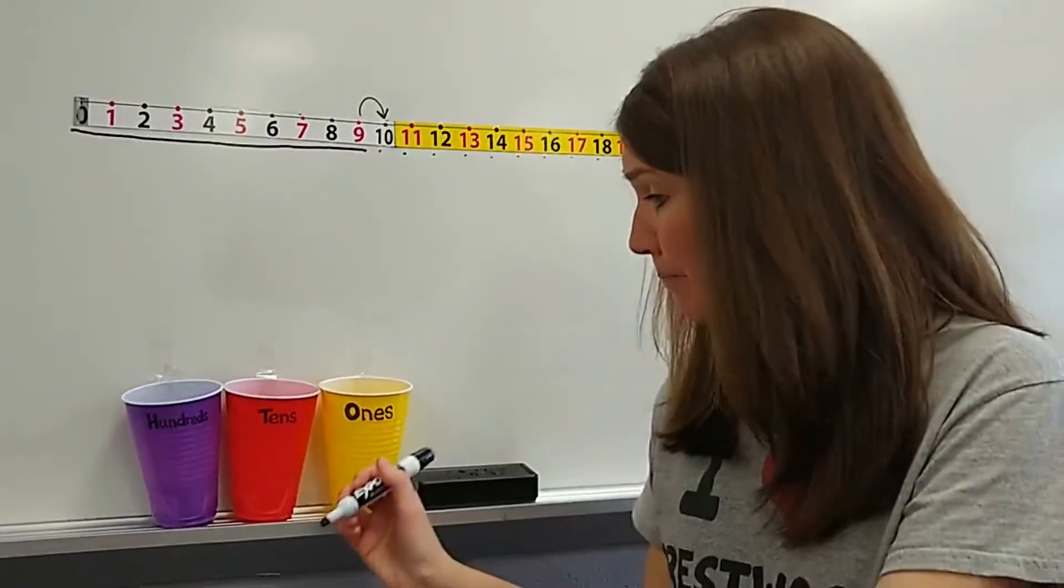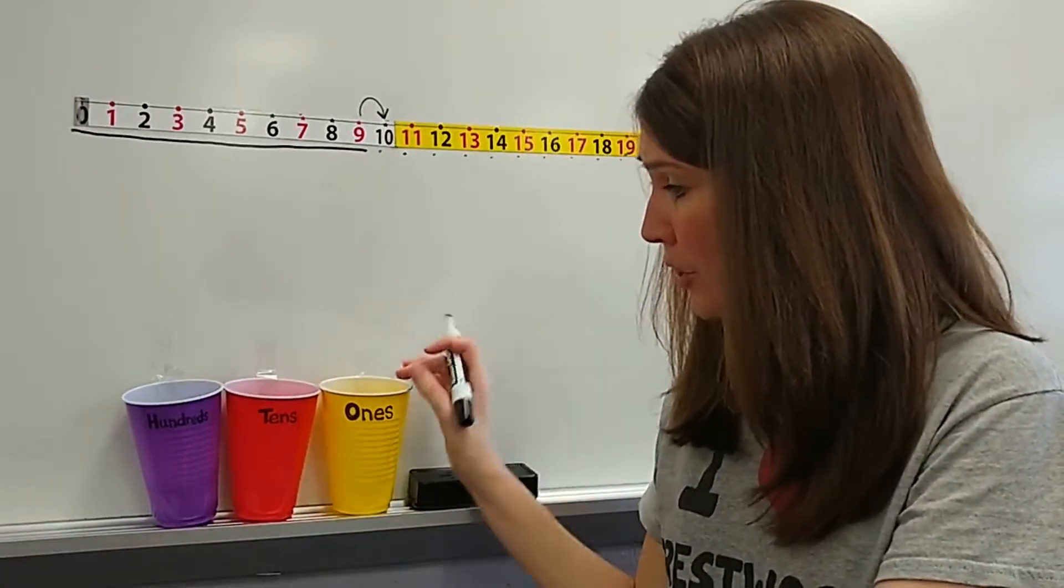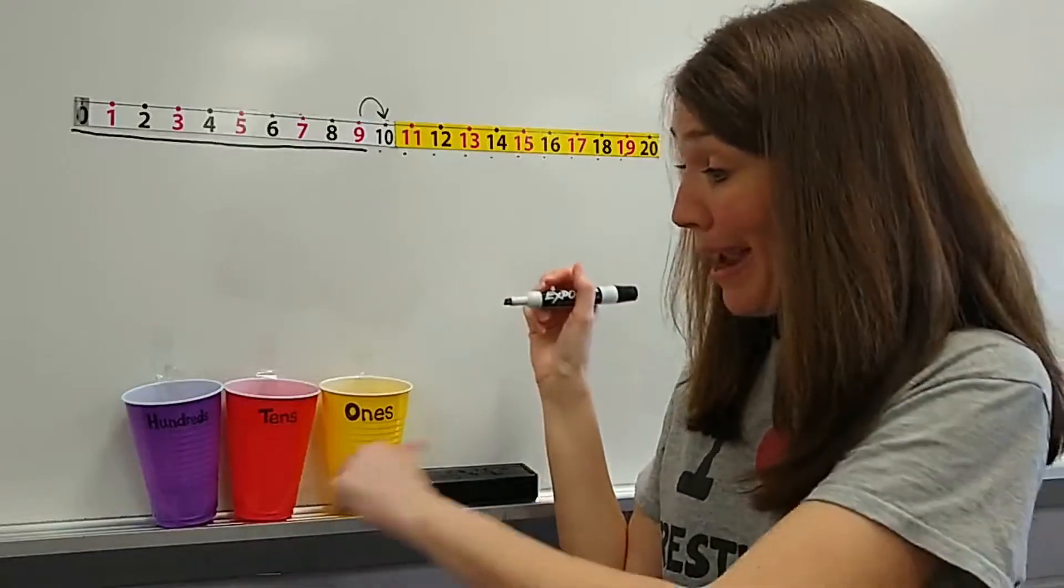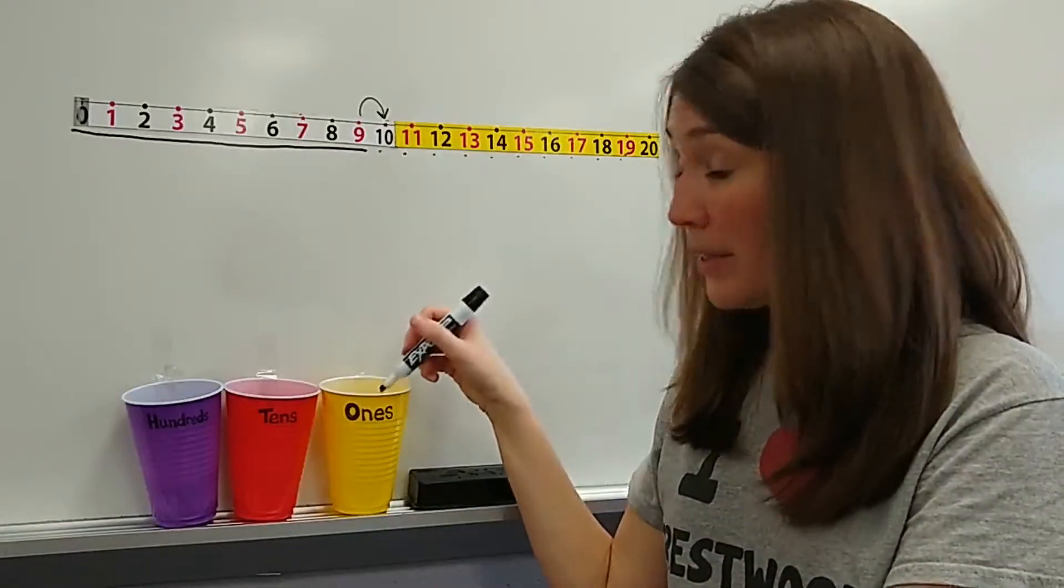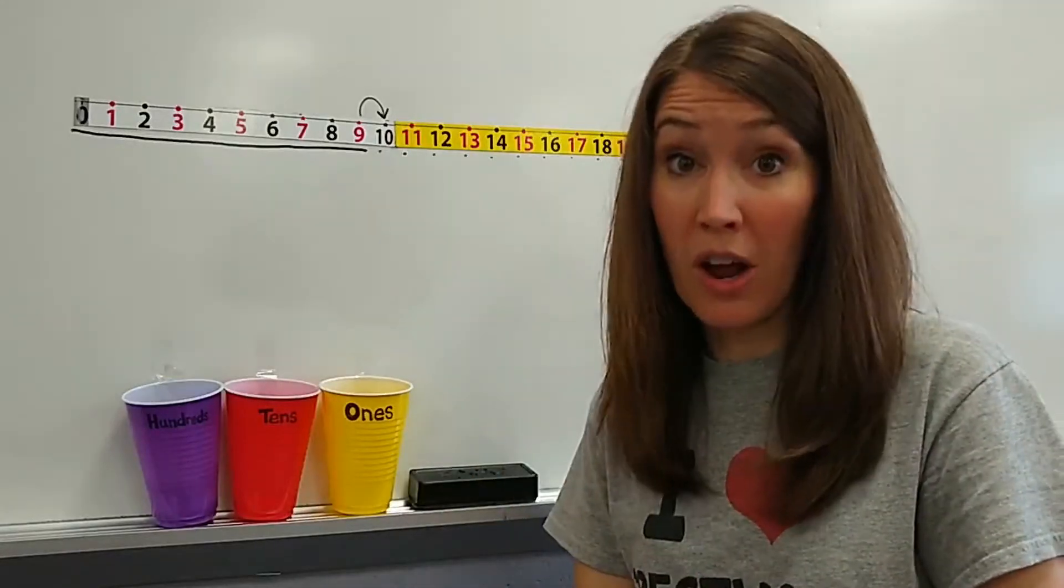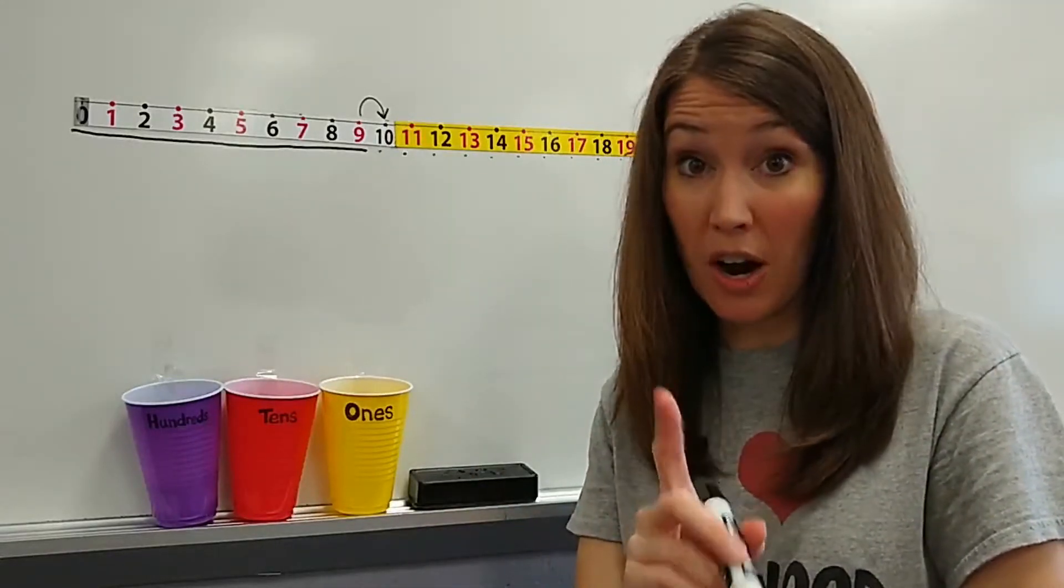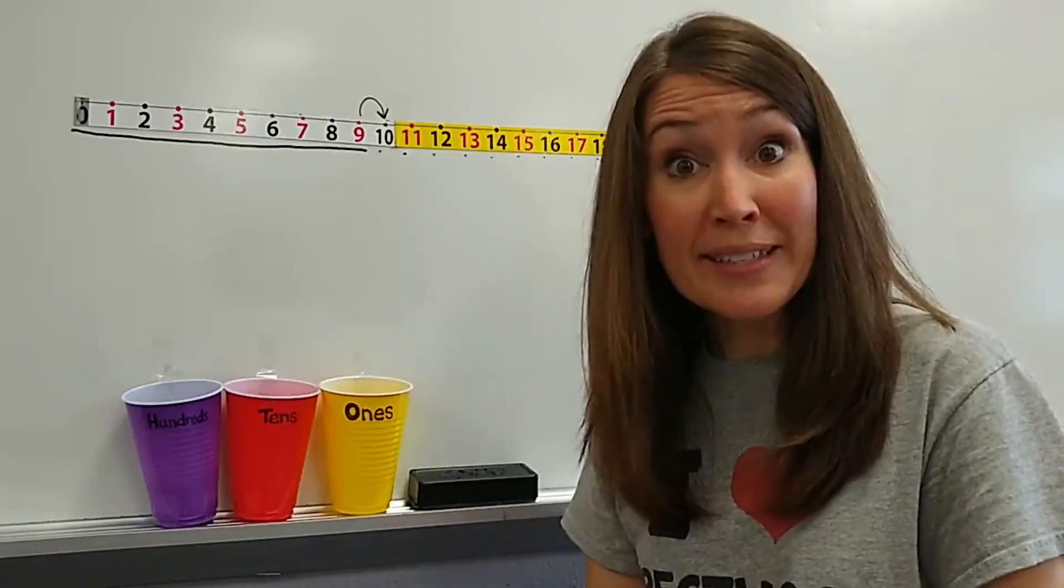Okay, these are our special cups. We're going to start with the ones cup always. Now, the ones cup has to be all the way on this side, on the right. The ones cup is where we add one straw at a time. Every time we add one straw, we have to put it in the ones cup.